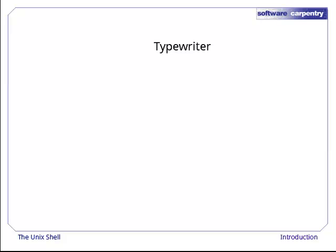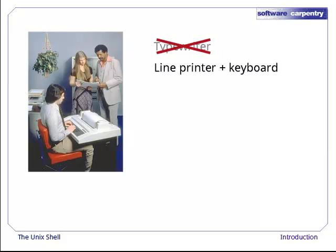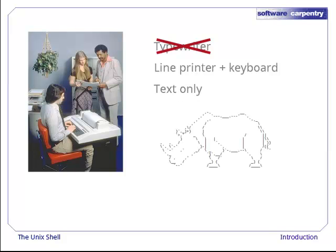When I say typewriter, what I actually mean is a line printer connected to a keyboard, like the DeckWriter LA36 shown here. These devices only allowed input and output of the letters, numbers, and punctuation found on a standard keyboard, so programming languages and interfaces had to be designed around that constraint. Although, if you were clever enough, you could find ways to do simple pictures using just those characters. This kind of interface is called a CLI, or command-line user interface, to distinguish it from GUIs, or graphical user interfaces, that most of us are now used to.